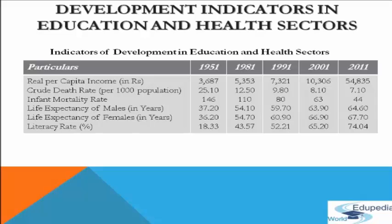Life expectancy of females at birth: in 1951 it was only 36 years, and it came up to 67 in 2011. Lastly, the literacy rate in percentage form: in 1951 the literacy rate was only 18%, which came up to 74.04% in 2011.